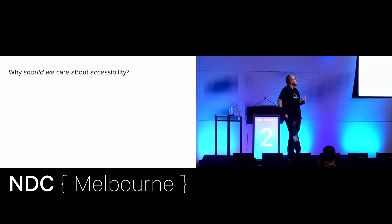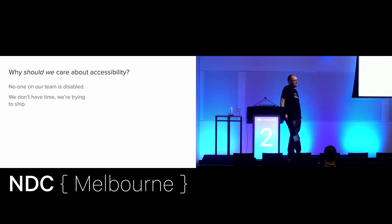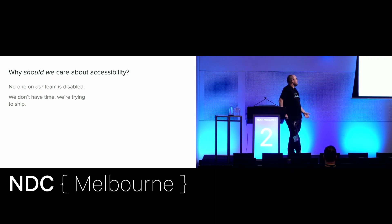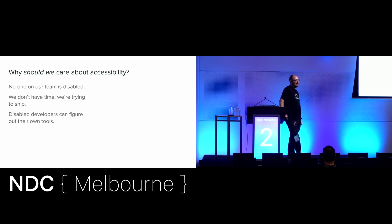When talking about back-end accessibility, companies ask: why should we care? No one on our team is disabled. We don't have time, we're just trying to ship. Disabled developers can figure out their own tools - why should I make allowances in my code? I don't use a screen reader. It's on them to figure out how to interact with it.